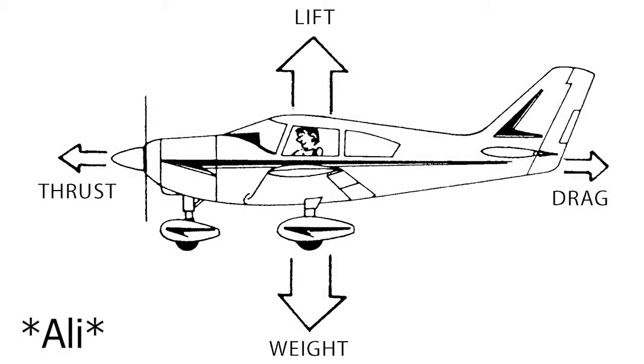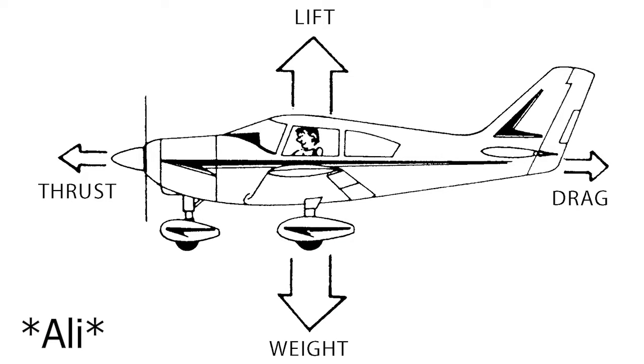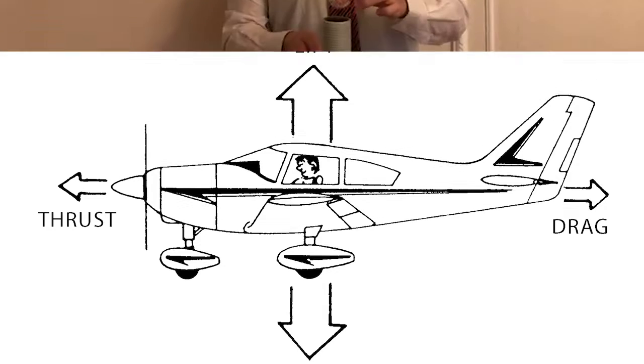To start off, weight. The weight force affects absolutely all objects, including aircraft. The earth pulls on objects with a force directed toward the center of the earth, regardless of the direction of movement. Generally, there is an almost constant gravitational force on the plane during take-off, flight, and landing altogether. It is clear that weight and lift oppose each other, so in order to take off and fly, lift must overpower the weight.